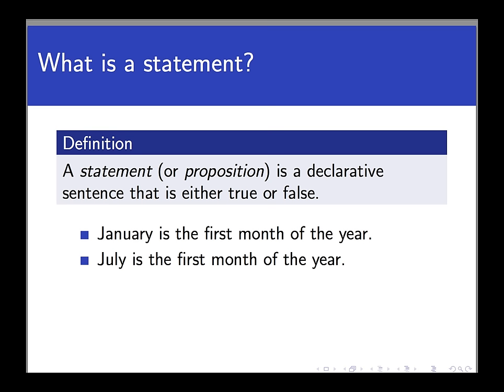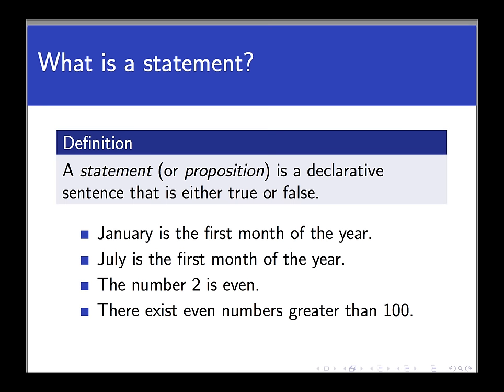Let's see some more examples. Two is even. This is clearly a declarative statement that is definitely, in this case, true. Although we do need to have a common understanding of what even means. There exist even numbers greater than 100 is a statement that is, in this case, definitely true. For example, 104. That's even, and it's greater than 100, so they exist.